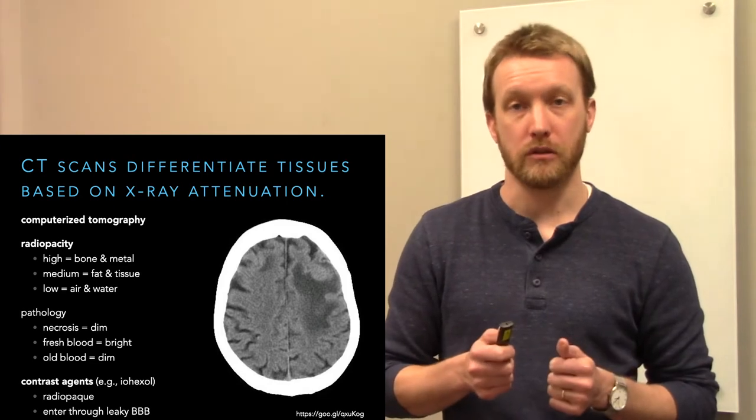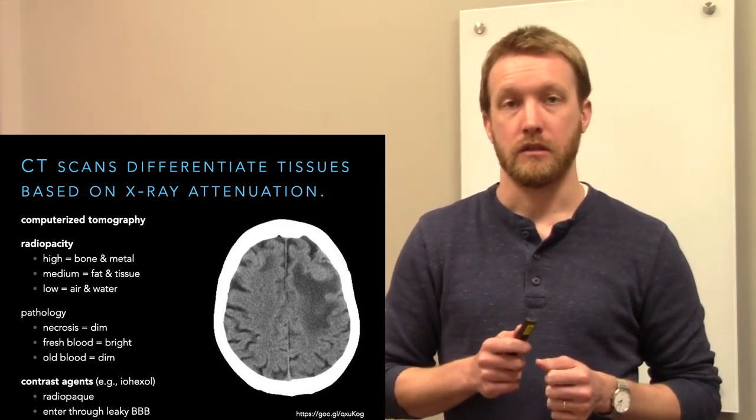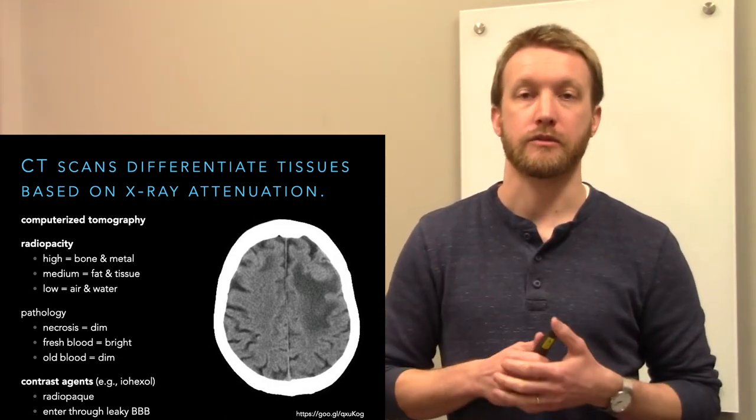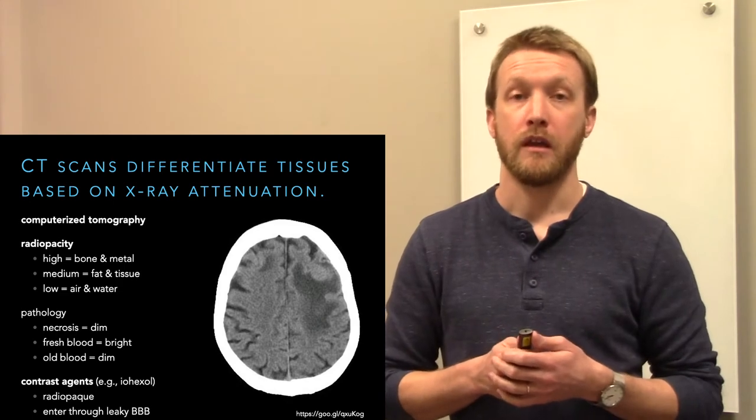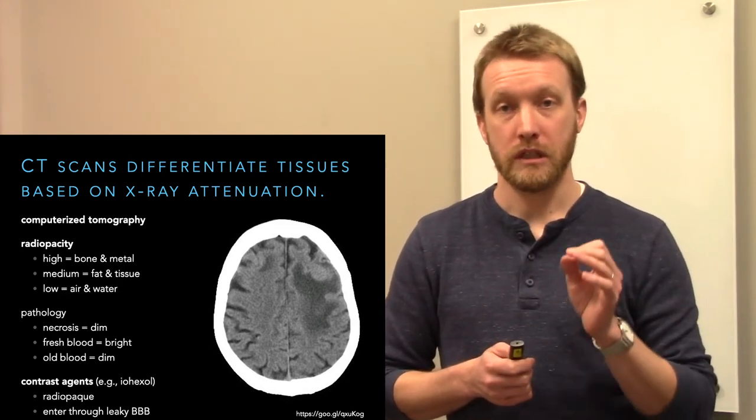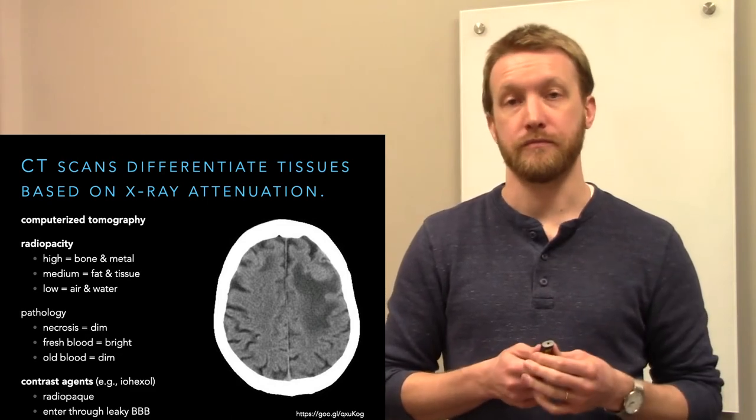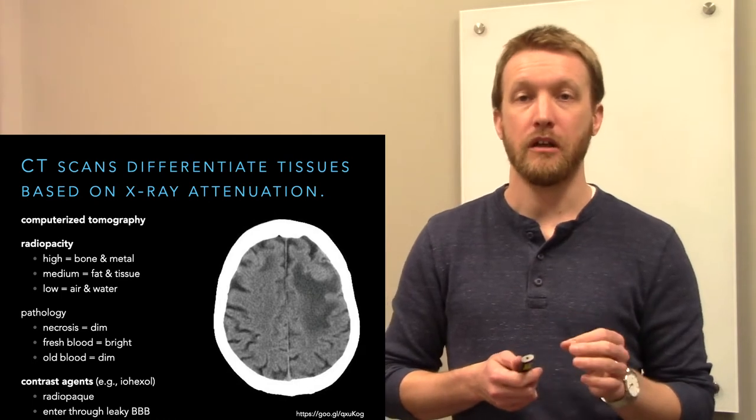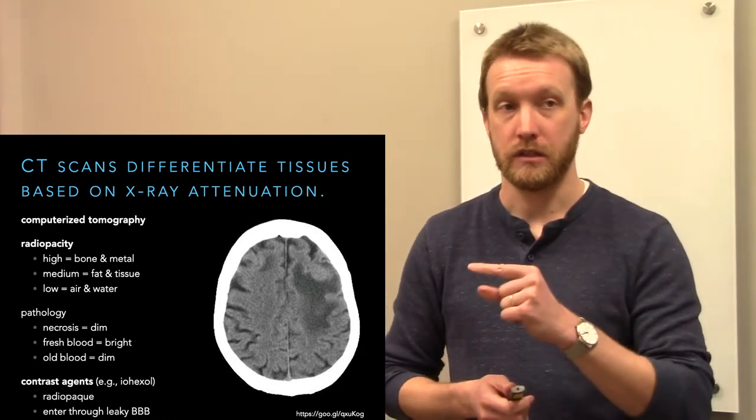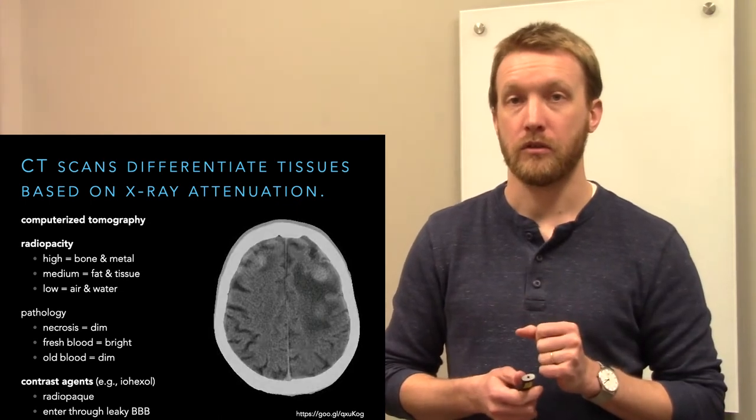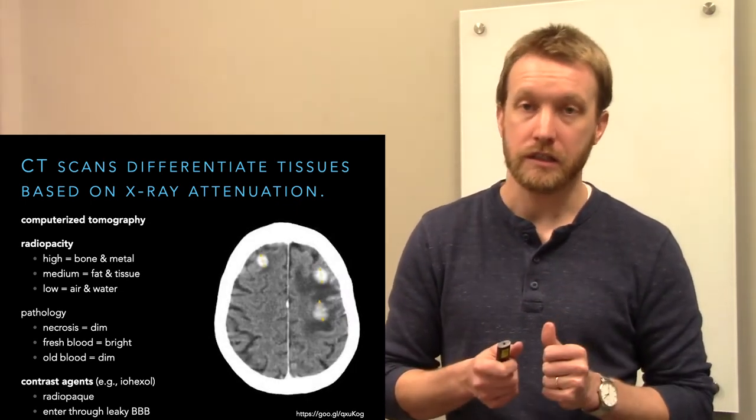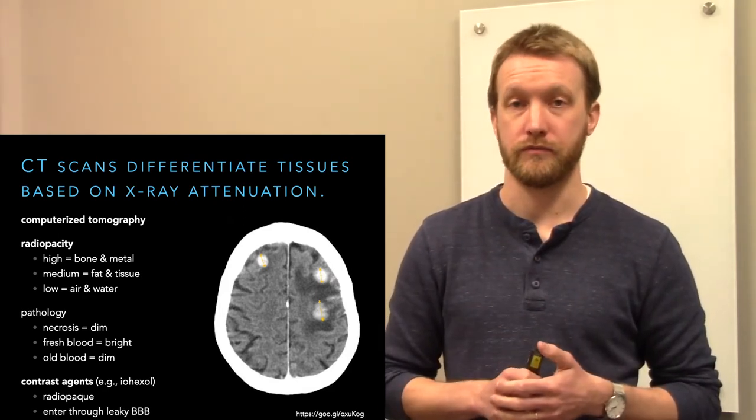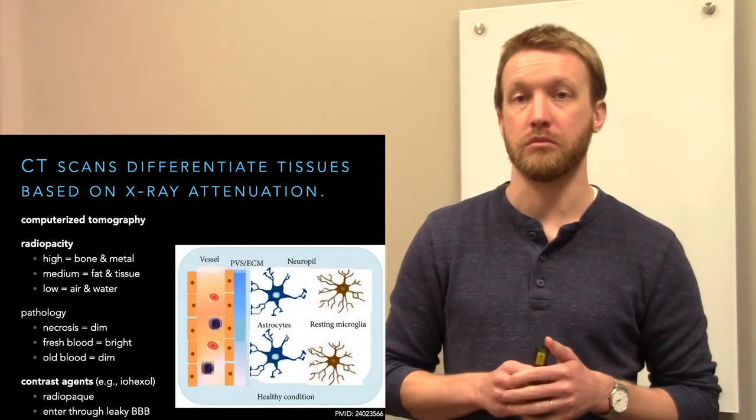Now we can get a little better look by using contrast agents. The contrast agents here are radio opaque, meaning they are going to absorb the x-rays and thus appear bright. The cool thing about them is that they only enter through a leaky blood-brain barrier. These contrast agents don't pass the blood-brain barrier, so we can tell where there are sites of damage. This is the same scan, but now with contrast. You can clearly see the areas of pathology by using the contrast agent.